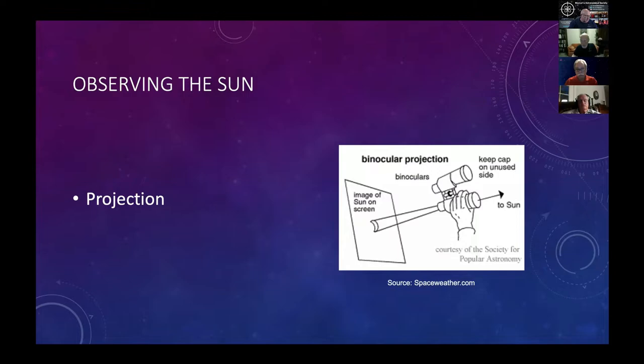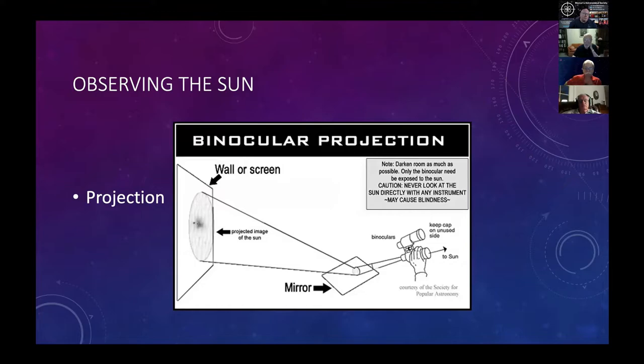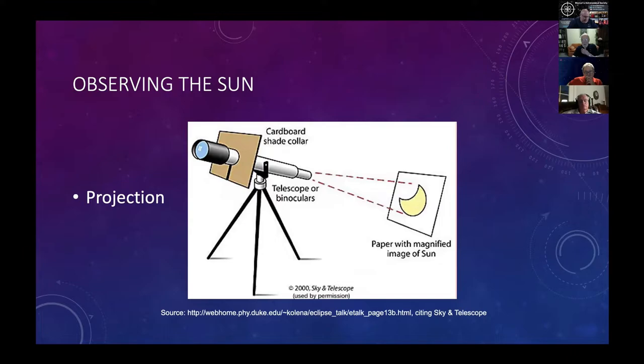How do we observe the sun? Projection is a safe way to do it. This method is okay for observing an eclipse or partial eclipse. Just hold the binoculars up. Be sure you don't look directly through them. You project the image of the sun onto a screen. You're going to have to shade the screen because the bright sunlight is going to wash out that image. You can do it off a mirror to get a better image, a bigger image at any rate. Never ever look through the sun directly with any instrument that is not safely filtered because it can blind you.